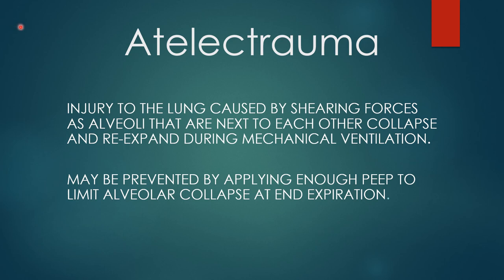We use PEEP to recruit lung, improve oxygenation, and allow us to reduce FiO2 to a safe level. But PEEP also helps avoid atelectrauma. If PEEP is too low, large numbers of alveoli open on inspiration but collapse on exhalation, then open and collapse with each breath. This repetitive alveolar collapse and expansion causes lung injury and inflammation — that is atelectrauma. We adjust PEEP upward to recruit as much lung as possible and prevent collapse during exhalation.